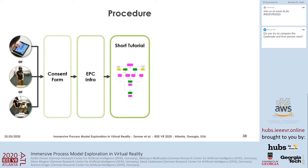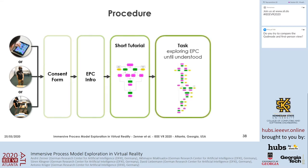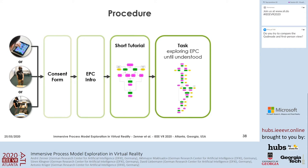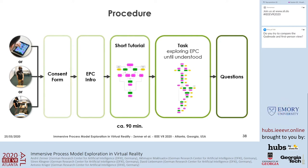Each participant was assigned to one condition. After filling out a consent form and reading an introduction, they practiced learning an EPC in a short tutorial. After completing the tutorial, each participant performed the actual task of learning and understanding the complete test process, indicating to the experimenter when they had understood it. The experimenter then stopped taking the time, and a set of questionnaires was filled in. The complete study took around 90 minutes per participant.